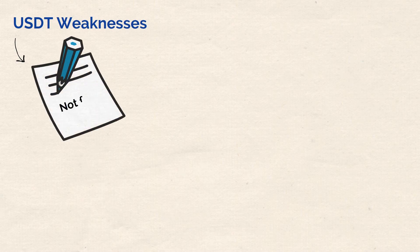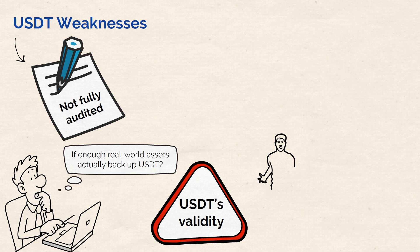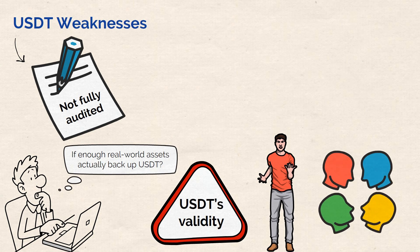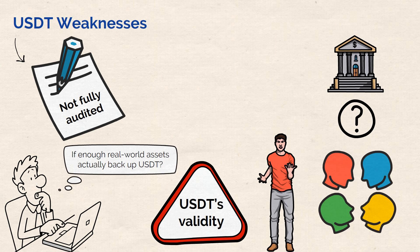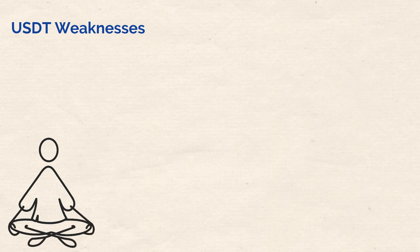So what are some of USDT's weaknesses? The most obvious concern is that its reserves are not fully audited on a regular basis, meaning nobody knows for sure if enough real-world assets actually back USDT as they should. This leaves room for speculation about USDT's validity and has led critics to accuse Tether of printing coins out of thin air. Despite adequate opportunity for clarification, Tether has yet to give a definitive answer or allow a thorough third-party audit. This lack of transparency could become USDT's Achilles' heel in the long term.